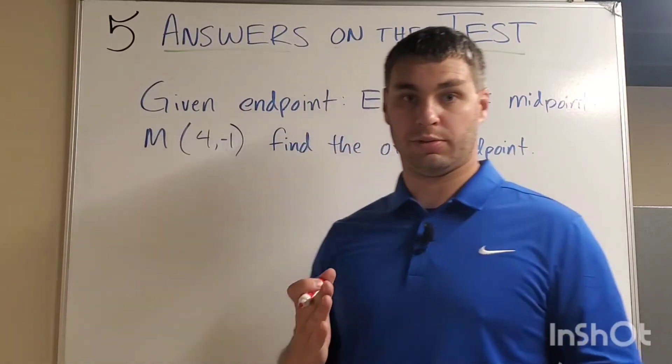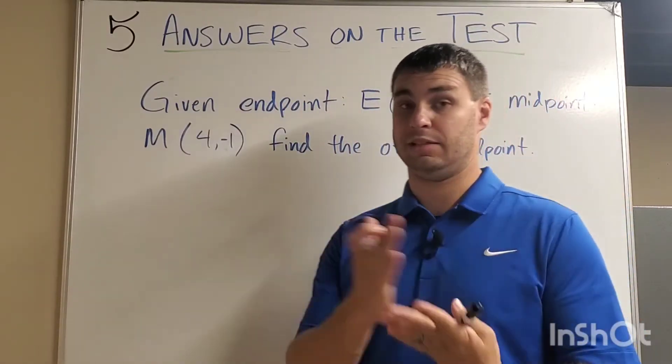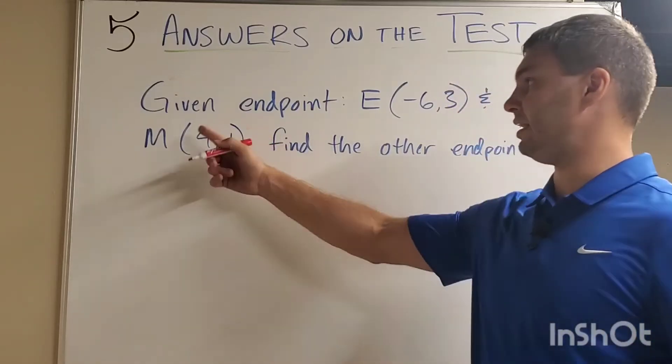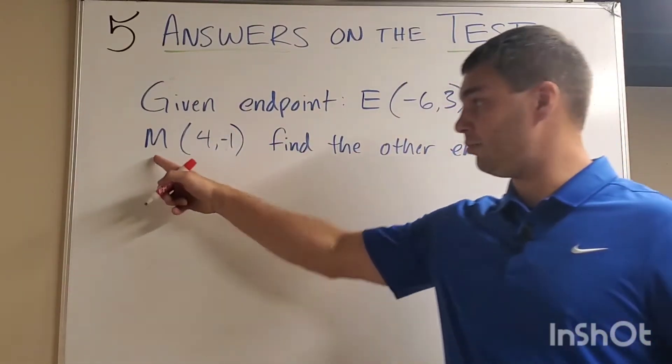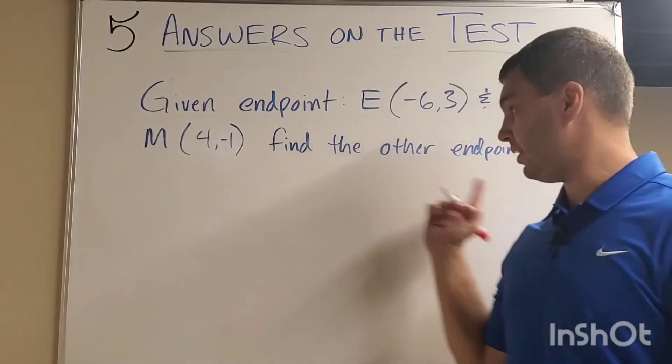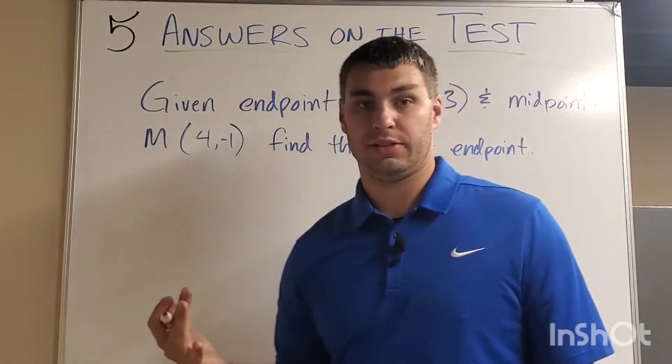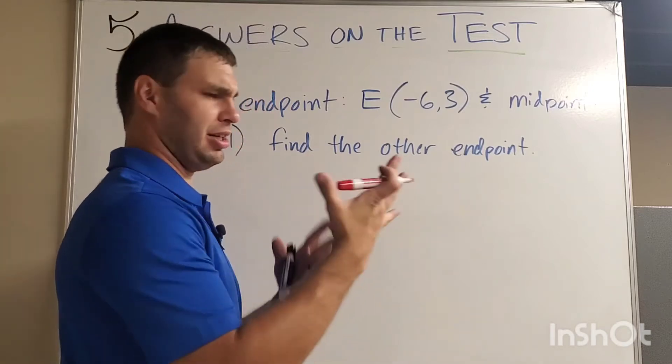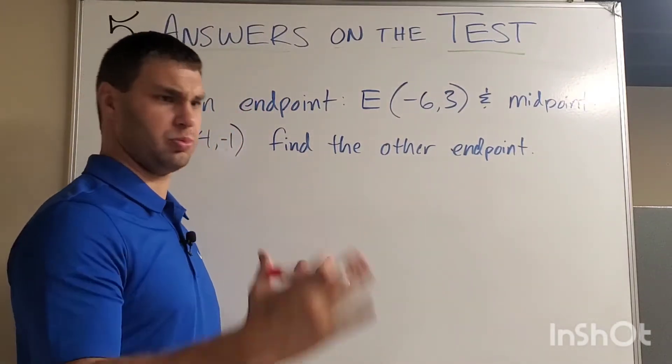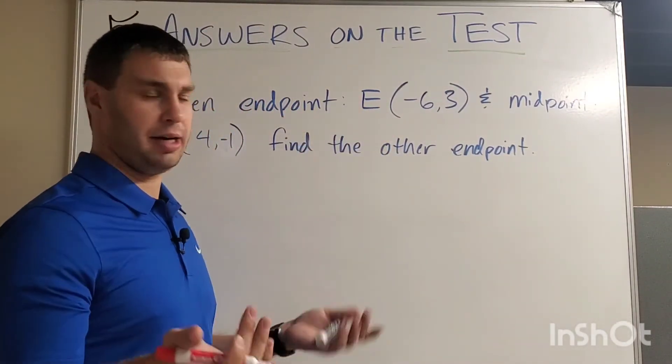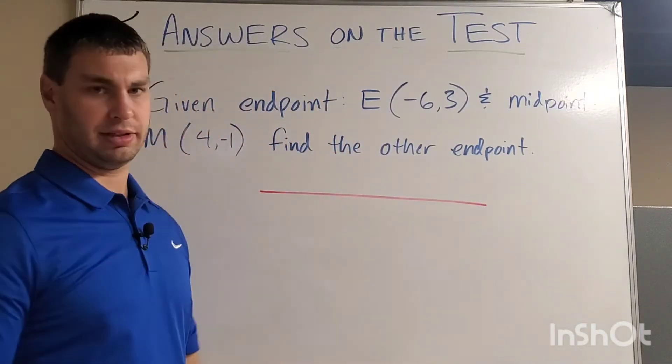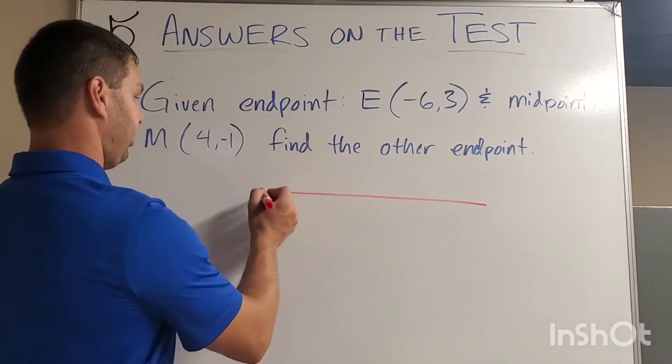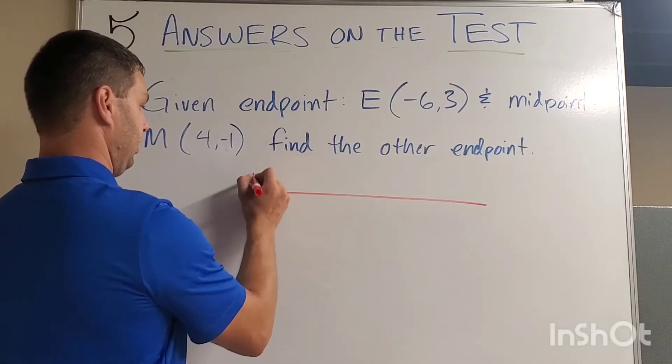Part three. In this one, we're going to be given an end point and a midpoint. We have to find the other end point. In fact, this is what it says. Given end point E, negative six, three and midpoint M, four, negative one, find the other end point. The easiest way to do this is to draw a picture of it. Now I know on a coordinate plane, this would probably be an angled line. But for simplicity's sake, let's just draw a horizontal line. We'll label it E for end point.